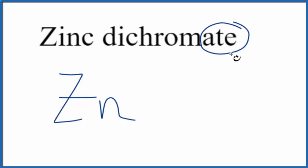The dichromate, this ate ending, you won't find that on the periodic table. When we see ate, we're thinking polyatomic ion.